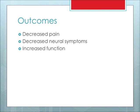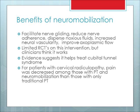By performing ulnar nerve neuromobilization using the described procedures and parameters, patients should see a decrease in pain, decreased neural symptoms, and increased function. Benefits of neuromobilization include facilitating nerve gliding, reducing nerve adherence, dispersing noxious fluids, increasing neurovascularity, and improving axoplasmic flow. Although there are limited RCTs on this intervention, clinicians find it effective. Evidence also supports its use for cubital tunnel syndrome, and research shows that patients with cervical radiculopathy receiving PT combined with neuromobilization had greater pain reduction than those receiving traditional PT alone.